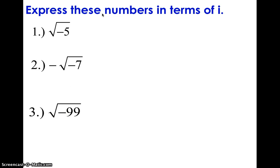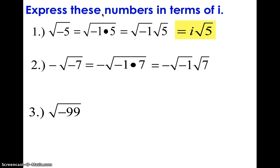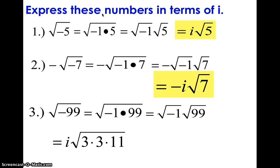Together, the real and imaginary numbers combine to form the complex numbers. So we can express some numbers in terms of i. Square root of negative 5 — we take the i out and get i root 5. Negative root negative 7 — break it out as negative 1 times 7, so it's negative i root 7. For the square root of negative 99, we split 99 into 3 times 3 times 11. There's a pair of 3s, so we get 3i root 11.